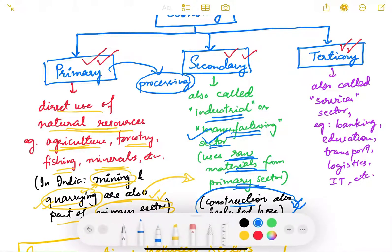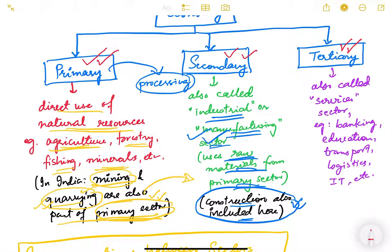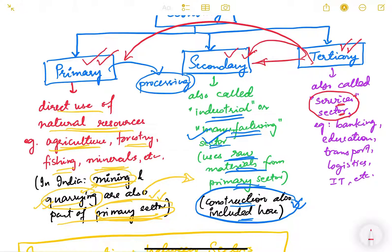The tertiary sector is known as the services sector because it provides services in the economy. This sector supports or provides services to either the secondary or primary sector, or to the common public. They don't undergo any processing or manufacturing of a product; they provide services. Examples include banking, education through schools and colleges, transportation, logistics, and information technology — all services that generate income, employ people, and are part of the tertiary sector.